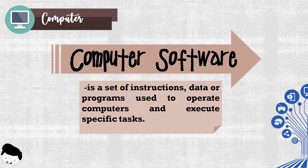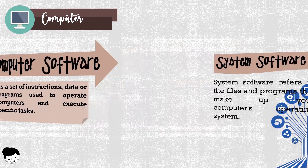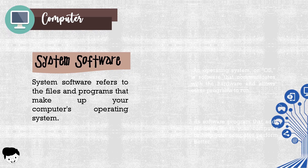Let's proceed to the second component: computer software. Computer software is a set of instructions, data, or programs used to operate computers and execute specific tasks. Computer software is a general term that describes computer programs that run on PCs, mobile phones, tablets, or other smart devices. Types of software — system software: system software refers to the files and programs that make up your computer's operating system. This commands or controls computer hardware so that the application software can perform.